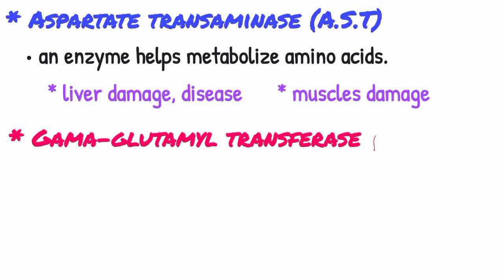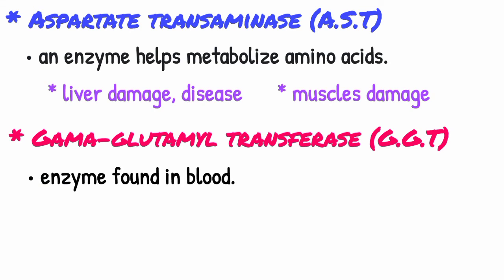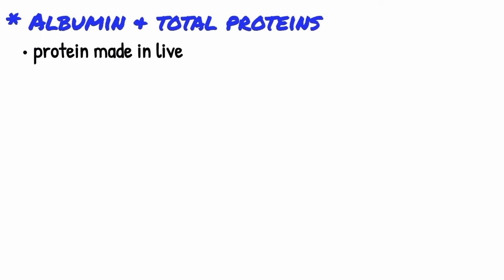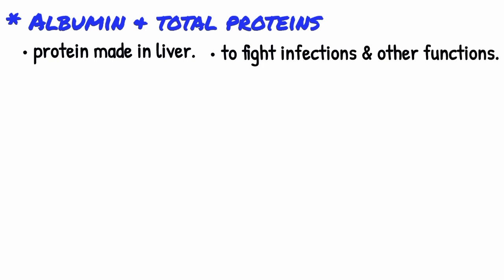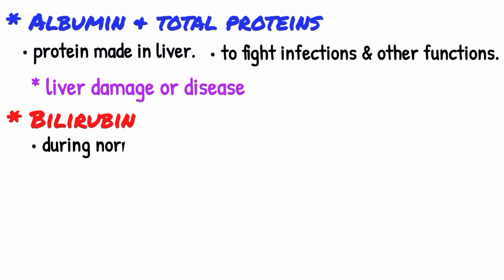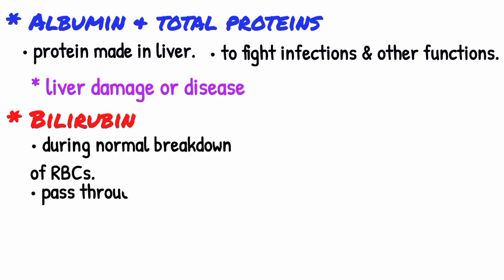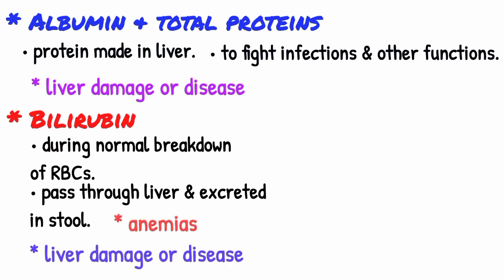For gamma-glutamyl transferase (GGT): GGT is an enzyme found in the blood, and higher than normal levels may indicate liver or bile duct damage. For albumin and total protein: albumin is one of several proteins made in the liver. Your body needs these proteins to fight infections and to perform other functions. Lower than normal levels of albumin and total protein may indicate liver damage or disease. For bilirubin: bilirubin is a substance produced during the normal breakdown of red blood cells. It passes through the liver and is excreted in stool. Elevated levels of bilirubin might indicate liver damage, disease, or certain types of anemia.